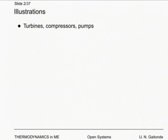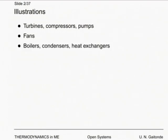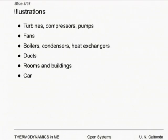Open systems are systems from which mass comes out, mass goes in, or both during the process under consideration. Examples include turbines, compressors, pumps, fans, boilers, condensers, heat exchangers, ducts through which something is flowing, and rooms and buildings — unless totally sealed off — which would essentially be any real-life system.